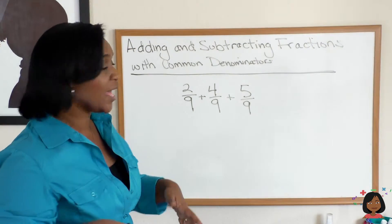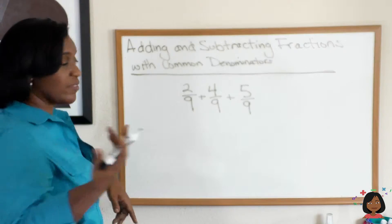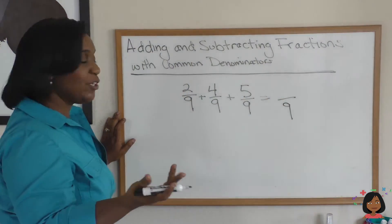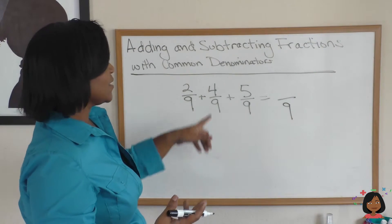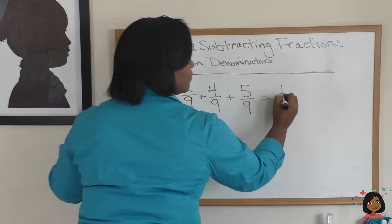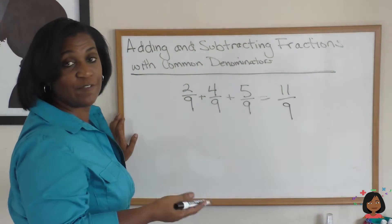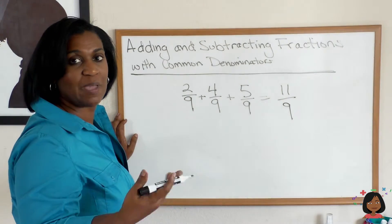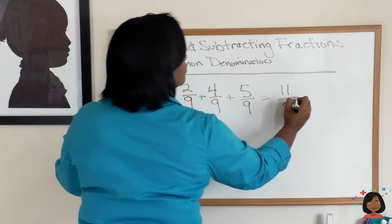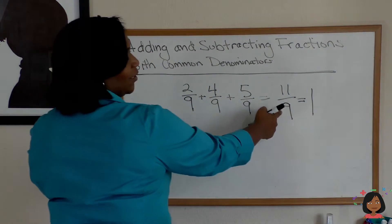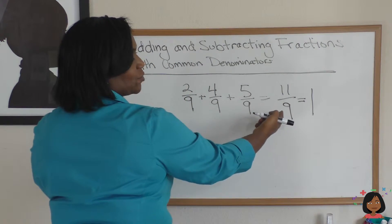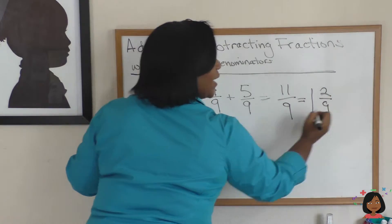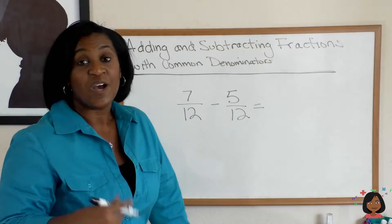Can I do it when I have more than one fraction that I'm adding together? I sure can — the same rules apply. Keep the denominator the same; here it's 9, so let's put 9 on the bottom. Add the numerators: 4 plus 2 is 6, then 6 plus 5 is 11, giving me an improper fraction of 11/9. In math we don't like to keep improper fractions, so let's make it a mixed number: 11 minus 9 leaves 2, so the answer is 1 and 2/9.